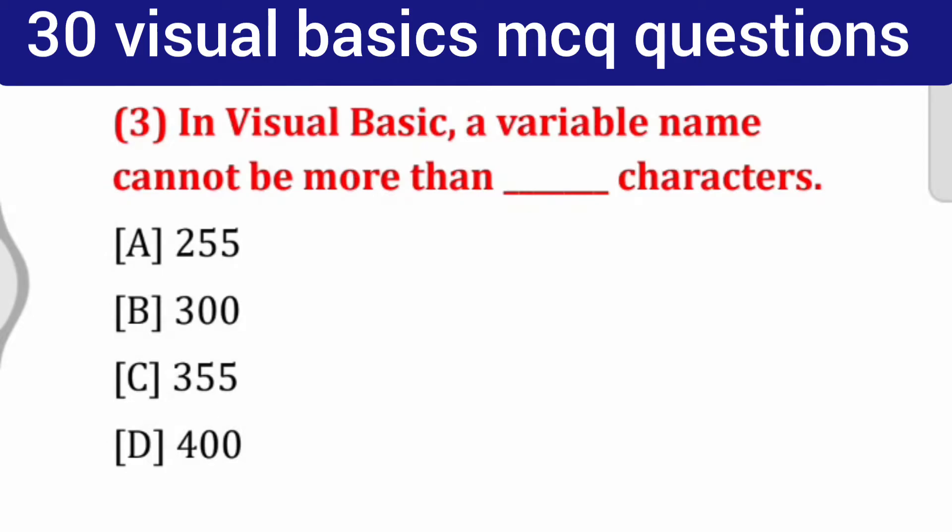Question number 3: In Visual Basic, a variable name cannot be more than ___ characters. Options: 255, 300, 355, 400. Correct answer is 255.